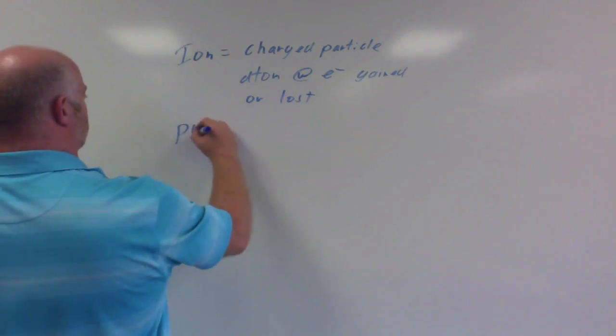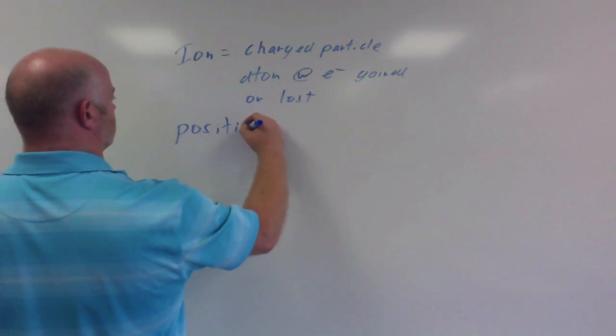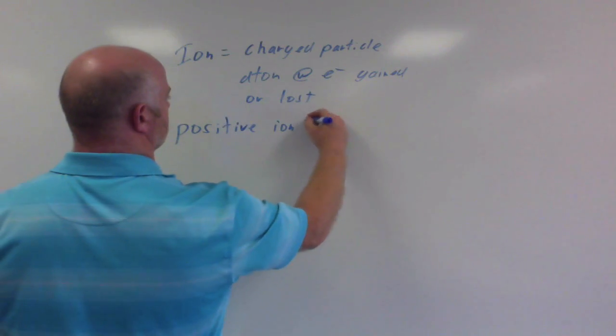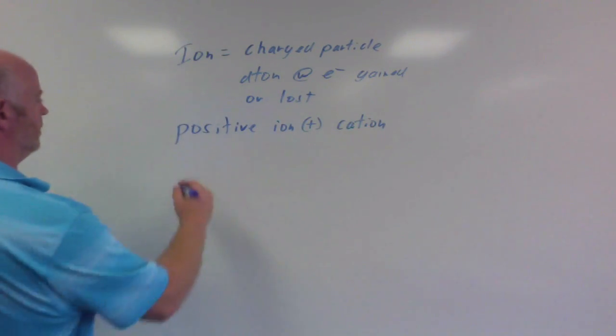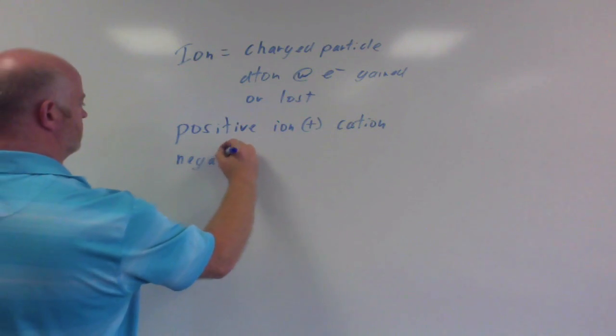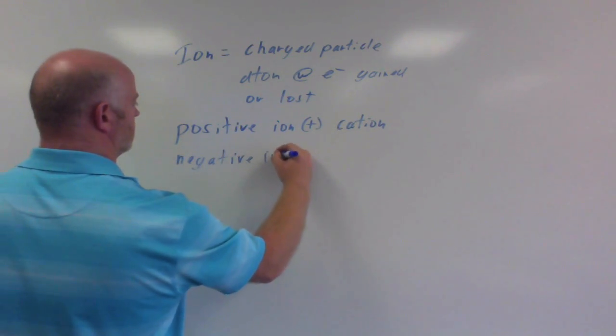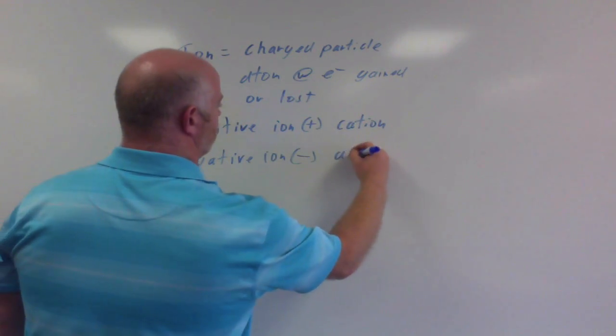So we can be two things, we can be a positive ion, which we call a cation, or we can be a negative ion, which we call an anion.